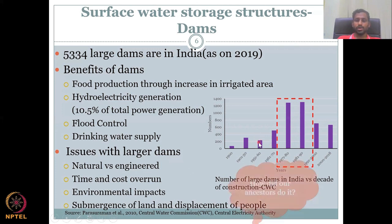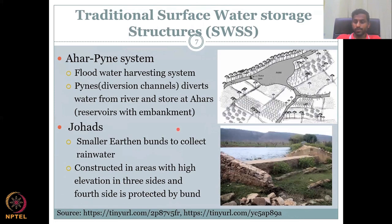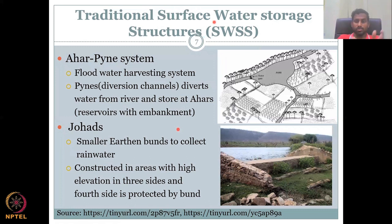Most large dams in India were built after independence — before that, especially during the British era, very few dams existed. So how did our ancestors, the kings and rulers before the British, control water? There are many traditional surface water storage structures, abbreviated as SWSS. There are multiple methods: traditional, nature-based, and engineered. Let's look at the traditional methods.